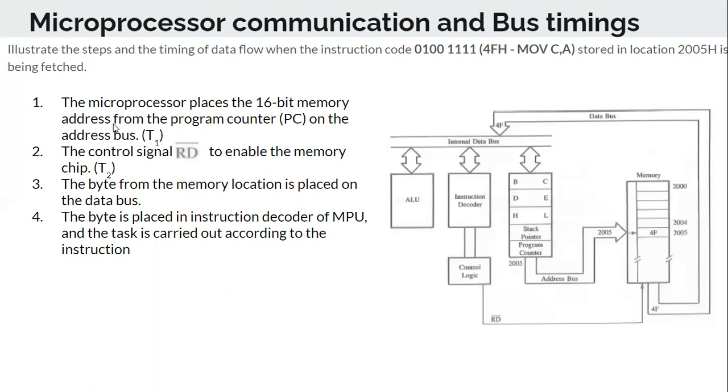Now the microprocessor places a 16-bit memory address. Now it is going to read 4F which is placed in the main memory at the memory location 2005. This 2005 is given in hexadecimal. In memory we store 8-bit data, whereas the address bit is 16-bit.